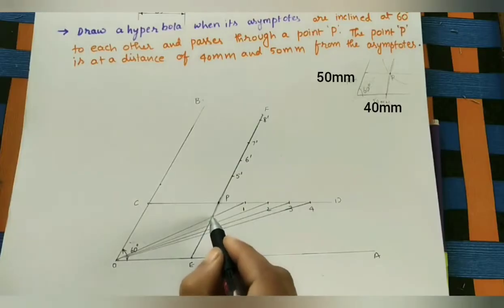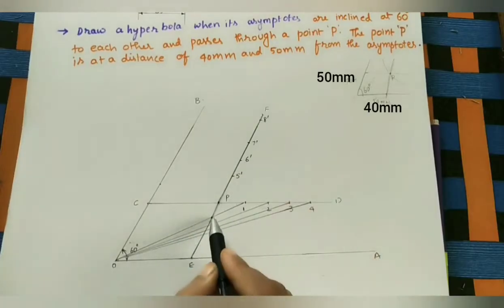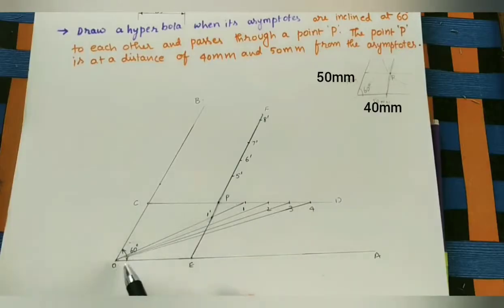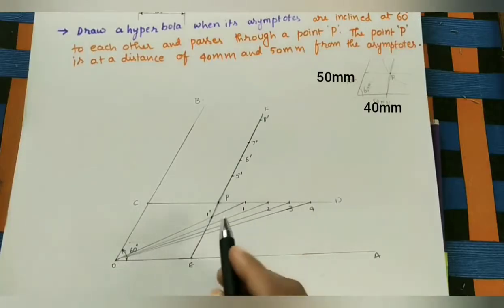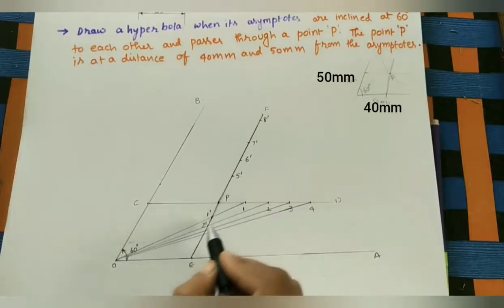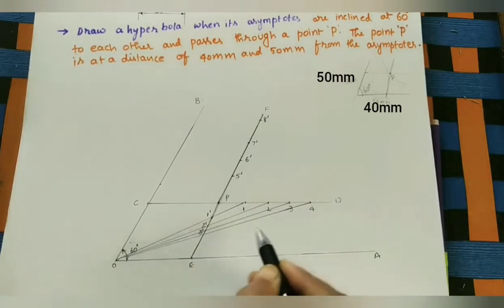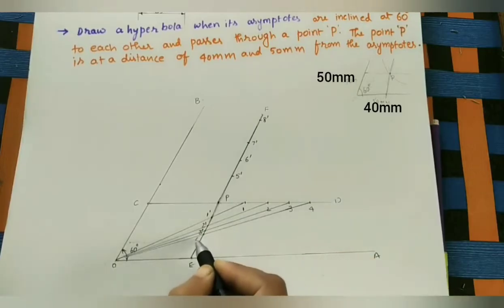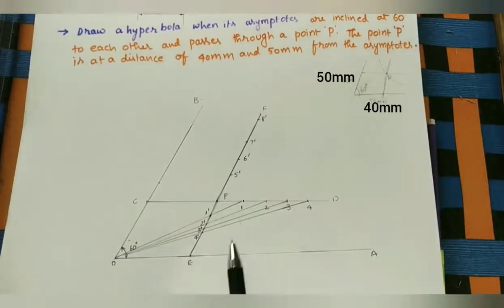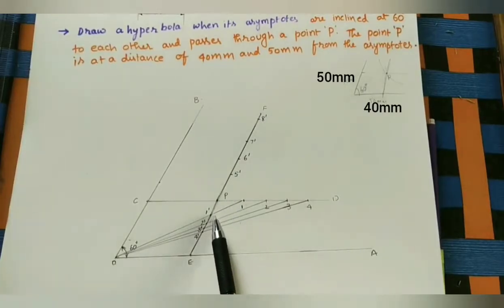Take the intersection points of these lines with the opposite axis. The intersection of the first line (O-1) with this axis is 1'. For the second line, the intersection is 2'. For the third line, it is 3', and for the fourth it is 4'. In this asymptote method, at point 1 draw a line parallel to one asymptote, and at point 1' draw a horizontal line parallel to the other asymptote.